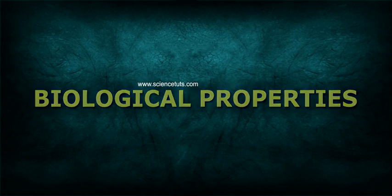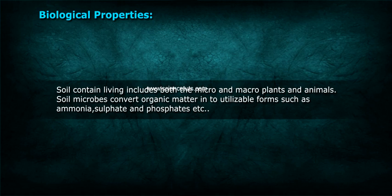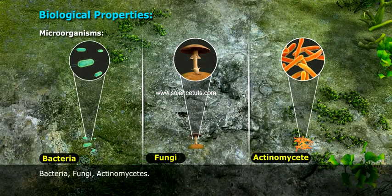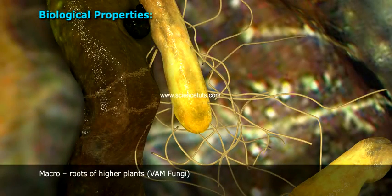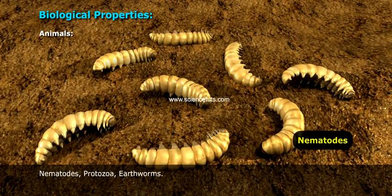Biological Properties: Soil contains living organisms, including both micro and macro plants and animals. Soil microbes convert organic matter into utilizable forms such as ammonia, sulfate, and phosphates. Microorganisms include Bacteria, Fungi, and Actinomycetes.